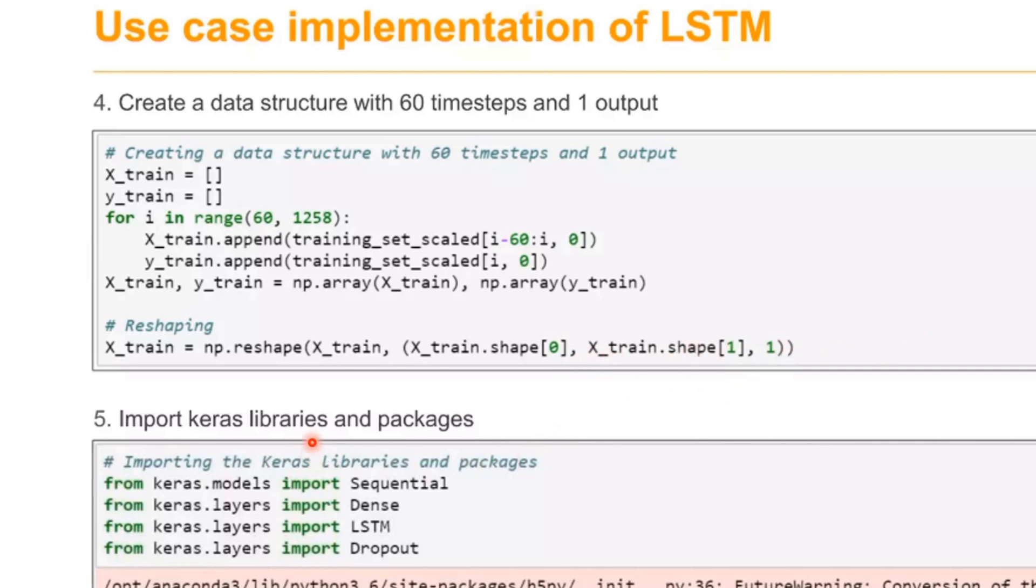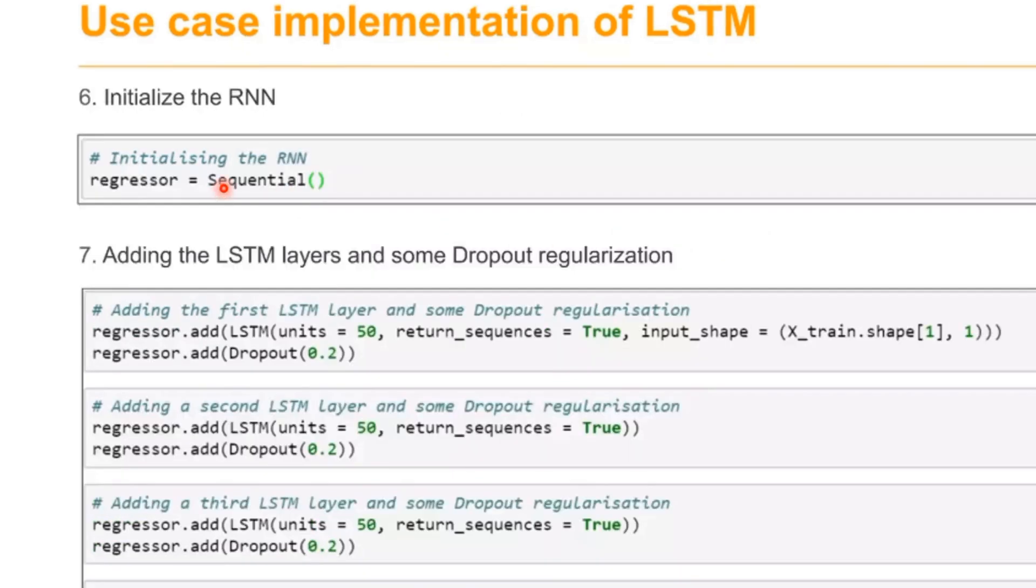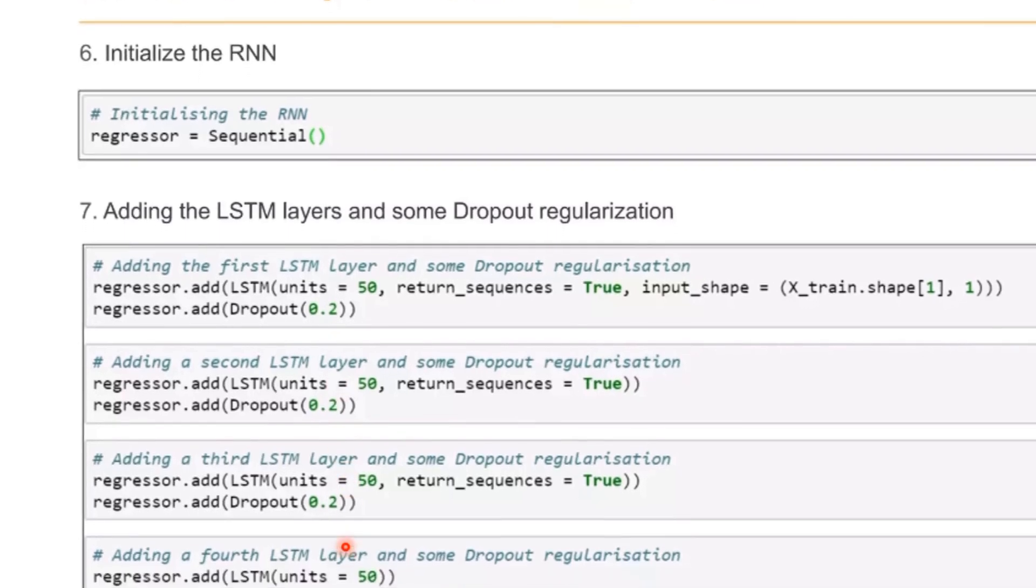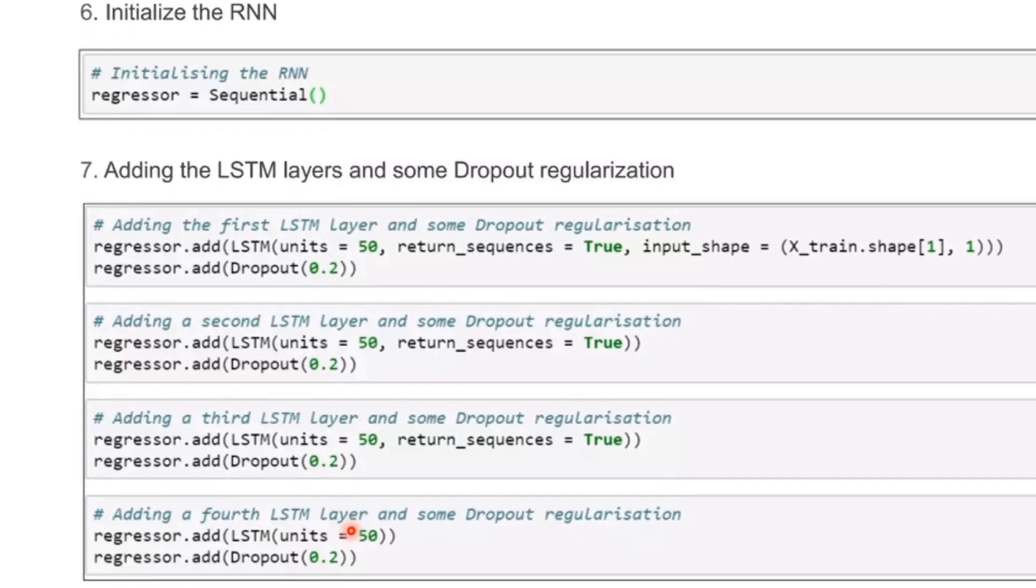After reshaping the value, import the Keras libraries. We'll use Sequential, Dense, LSTM, and Dropout. Initialize the sequential neural network, which is RNN. Then add 4 layers: the first LSTM layer, second, third, and fourth layers.